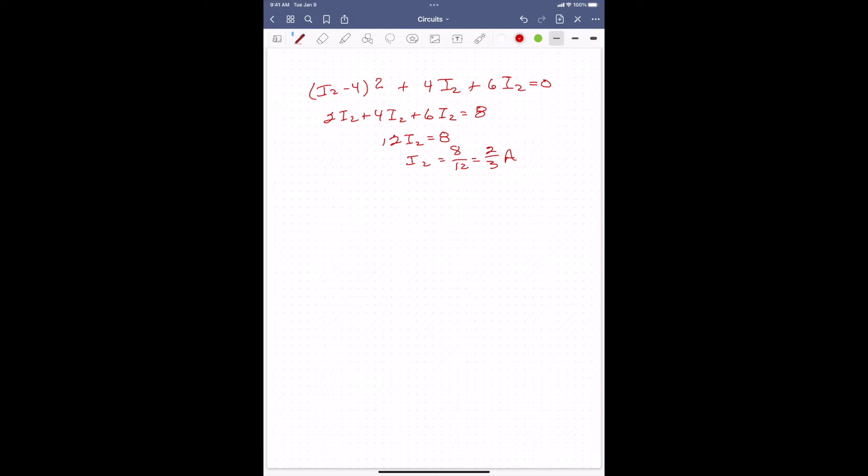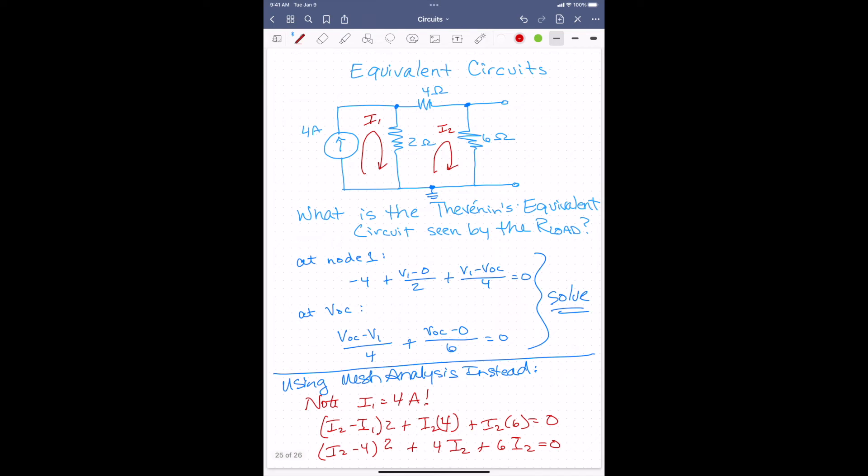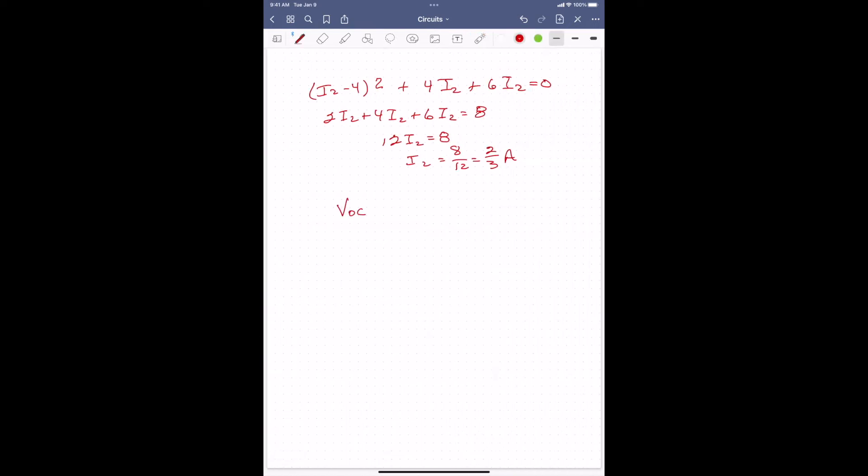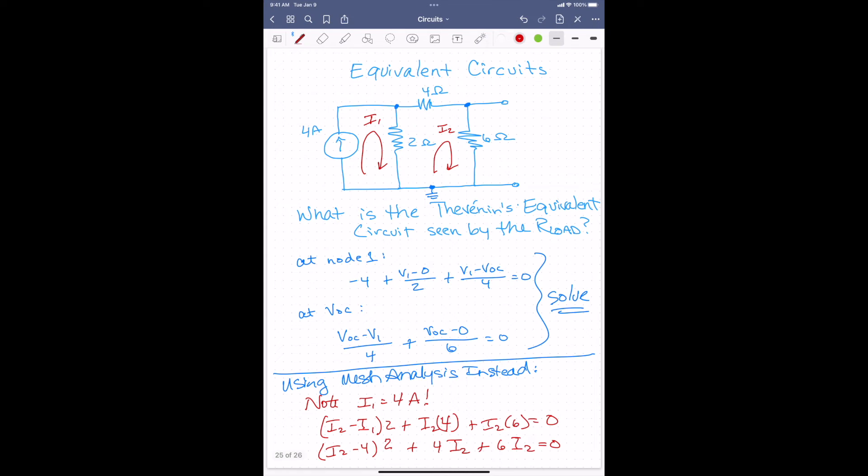So now, going back, what we have over here is we wanted to know the voltage across that 6 ohm resistor. We wanted to know VOC. So VOC is going to be I2 times 6, which will give me 2 thirds times 6, which will be 12 thirds, which is equal to 4. The unit is volts. So that tells us that VOC is 4 volts. So you could go and do the same analysis, solving these two equations, and you will also come up with that VOC is equal to 4 volts. I'll leave that as an exercise. So that's the first step. We have found VOC.